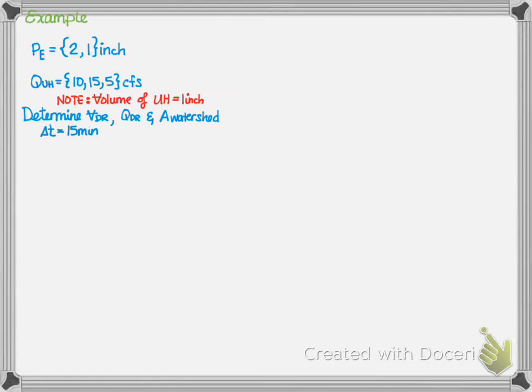So let's do an example to help with the illustration. We're given an excess precipitation of two inches followed by one inch, a unit hydrograph of 10, 15, and 5 CFS. Remember, the volume of a unit hydrograph is one inch. I'd like to determine the volume of direct runoff, the flow of the direct runoff hydrograph, and the watershed area. Assume that delta T is 15 minutes.